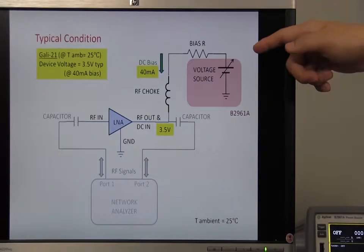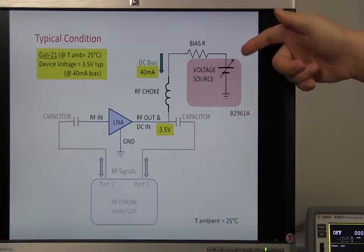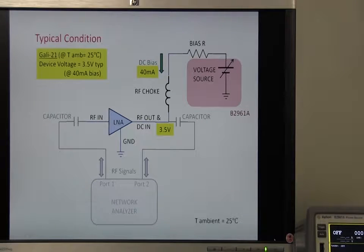Last time, I biased the amplifier using a voltage source and a bias resistor. This biasing method works well under a certain constant condition.